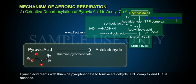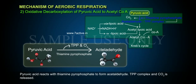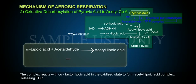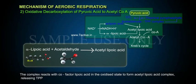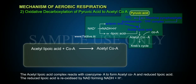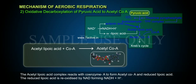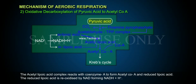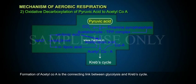Pyruvic acid reacts with thiamine pyrophosphate to form acetyl-CoA. A TPP complex and CO2 is released. The complex reacts with co-factor lipoic acid in the oxidized state to form an acetyl-lipoic acid complex, releasing TPP. The acetyl-lipoic acid complex reacts with coenzyme A to form acetyl-CoA and reduced lipoic acid. The reduced lipoic acid is re-oxidized by NAD, forming NADH+. Formation of acetyl-CoA is the connecting link between glycolysis and the Krebs cycle.